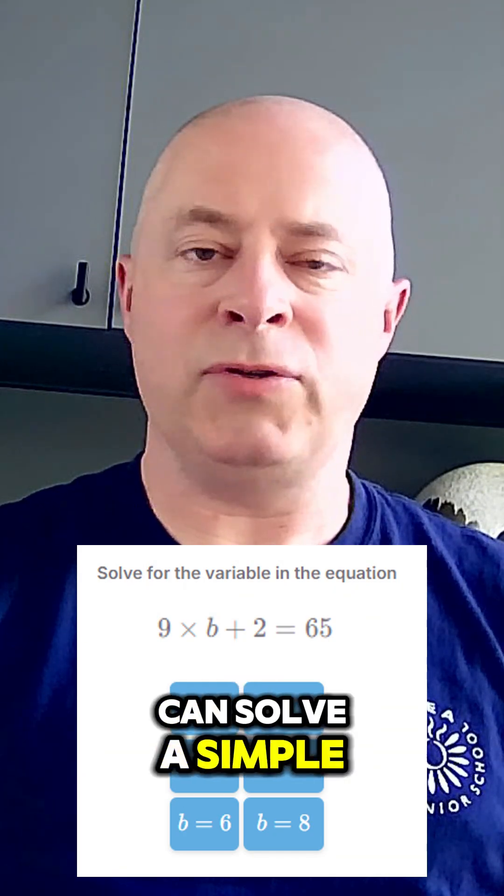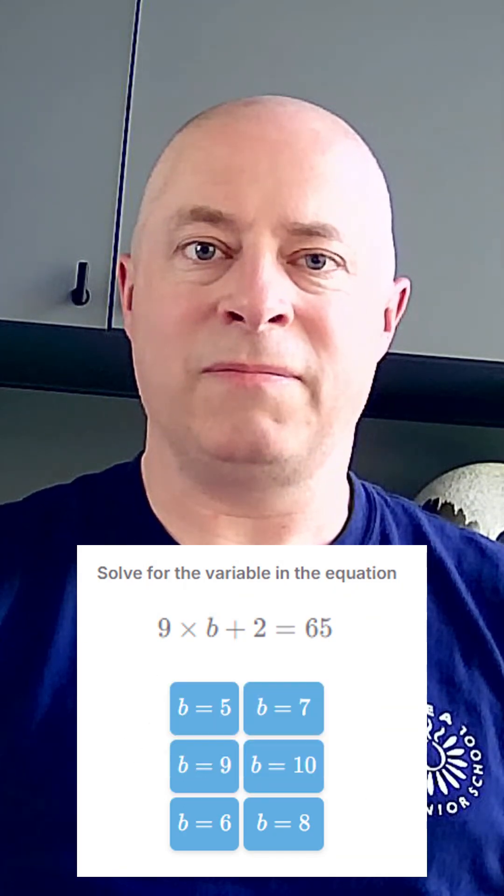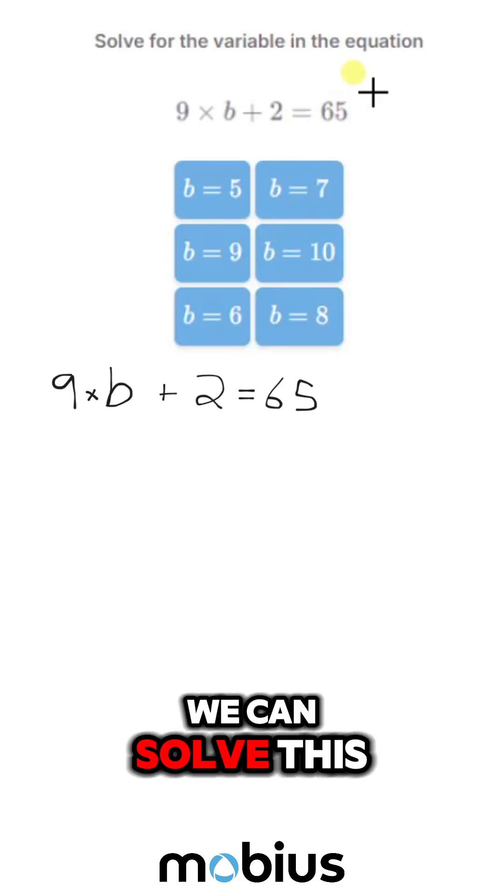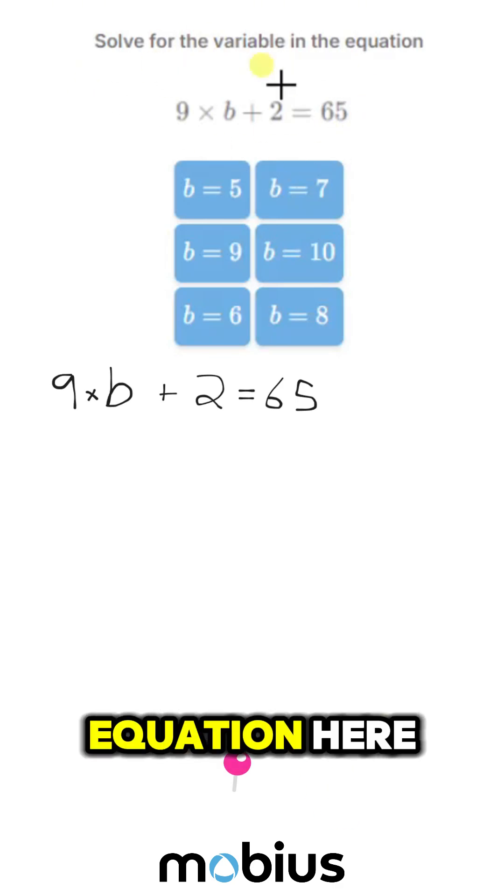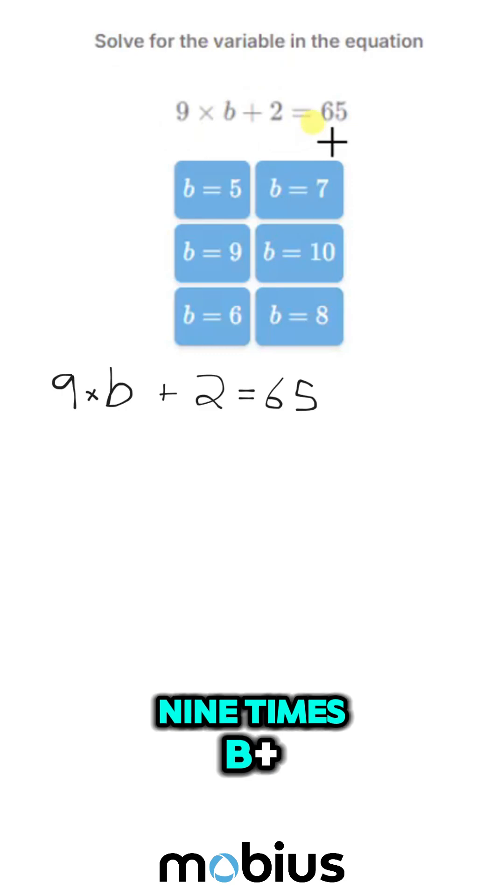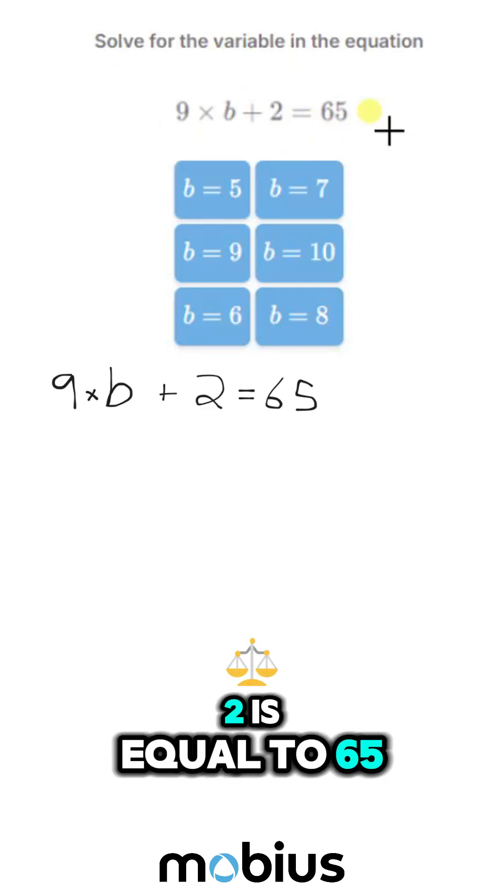Let's see if we can solve a simple two-step algebra equation. Okay, let's see if we can solve this equation here. 9 times b plus 2 is equal to 65.